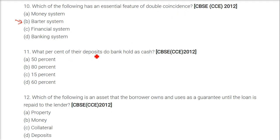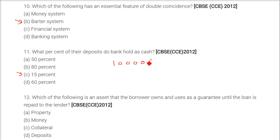What percent of their deposits do banks hold as cash? We are talking about India, so the answer is 15%. For example, if all depositors have deposited 10,000 rupees total, then 15% of that — around 1,500 rupees — has to be kept by the bank as cash.